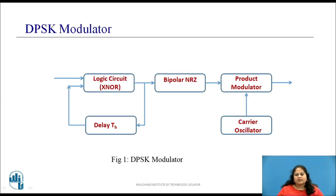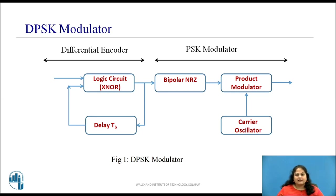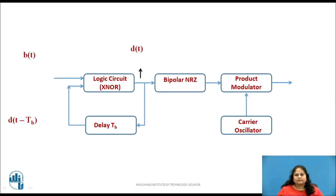This gives V_DPSK(t) which is equal to plus or minus A cos(ωc·t). The figure shows the DPSK modulator. It consists of two parts: a differential encoder and a PSK modulator. This PSK modulator is the same as in the BPSK modulator. Here, the encoded bit D(t) is obtained at the output of a logic circuit on which the PSK is performed.